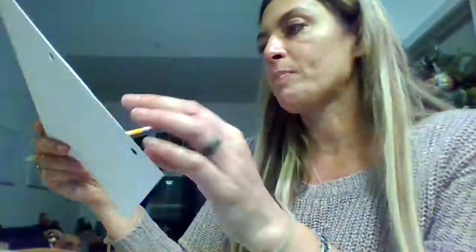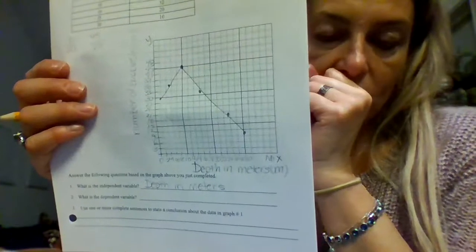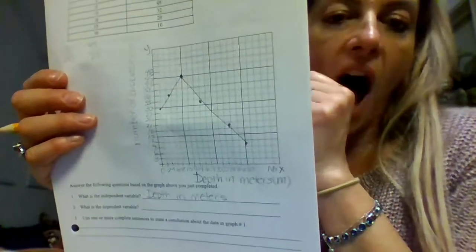What is the dependent variable? The dependent variable is going to be the thing that responds to the depth in meters. The dependent responding variable is going to be the number of bubbles in minutes. There's something wrong with my graph. Hold on a minute. Can anybody tell what's missing? Look at the graph. Something's missing.